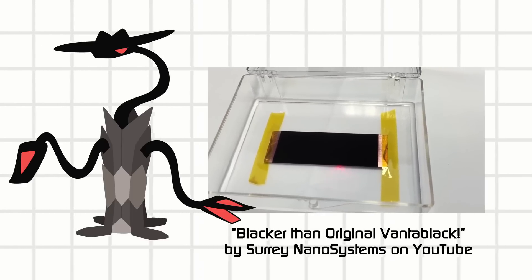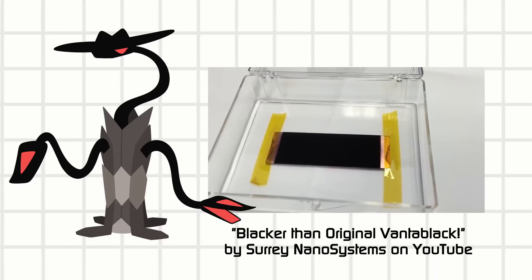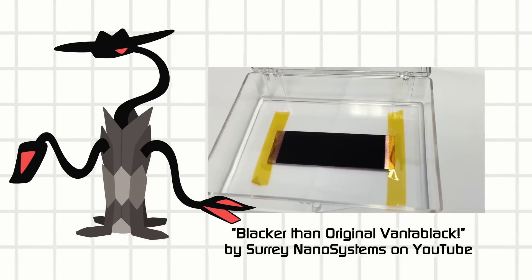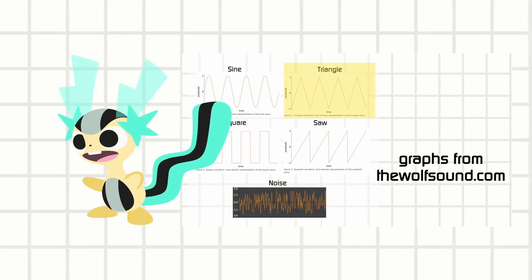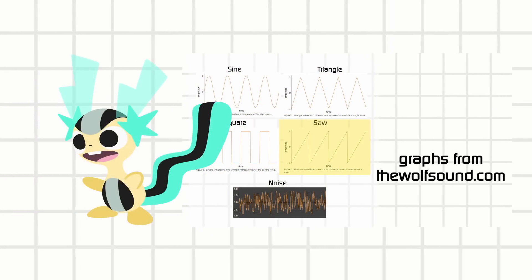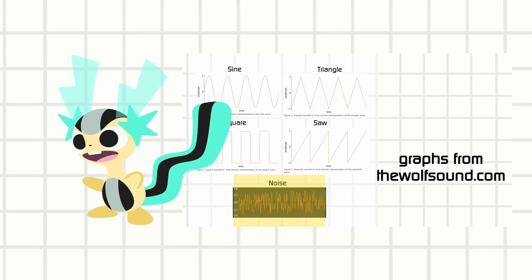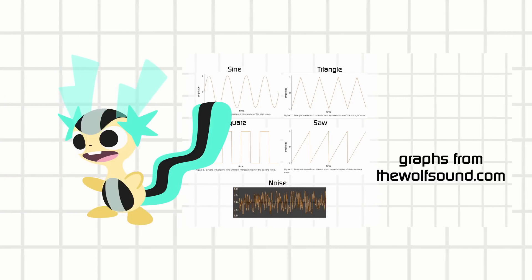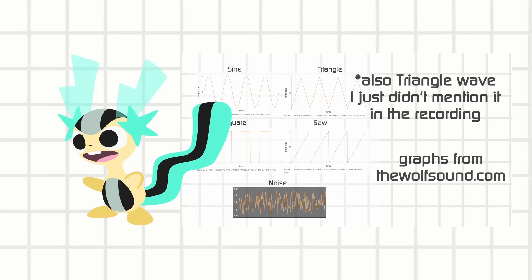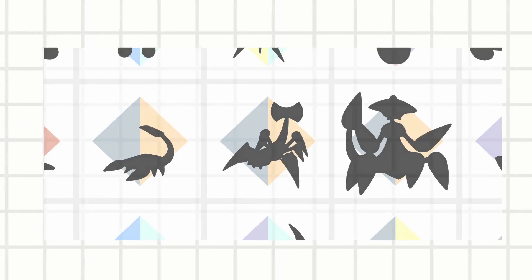For example, my Ventaworm references Vantablack, which are carbon rods that are engineered to absorb over 99.9% of light. Chippu shows off waveforms, especially the ones that were engineered to deliver sound in the days of limited hardware. But there are some tools and machines found in engineering that can probably make creature designs on their own.